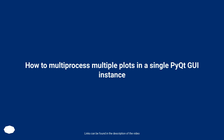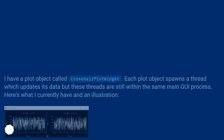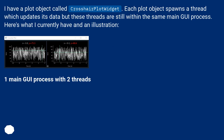How to multiprocess multiple plots in a single piped GUI instance. I have a plot object called CrosshairPlotWidget. Each plot object spawns a thread which updates its data, but these threads are still within the same main GUI process. Here's what I currently have in an illustration: one main GUI process with two threads.